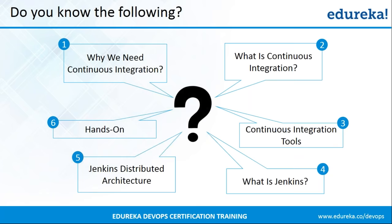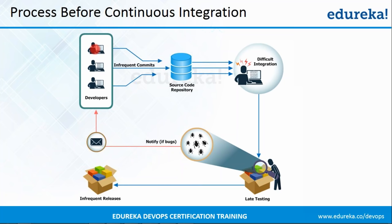So this is the process before continuous integration. As you can see, there's a group of developers who are making changes to the source code that is present in the source code repository. This repository can be a Git repository, Subversion repository, etc. And when the entire source code of the application is written, it will be built by tools like Ant, Maven, etc. After that, that built application will be deployed onto the test server for testing.